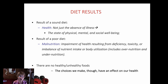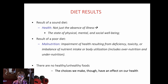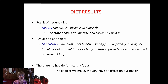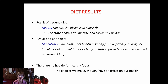The results of a poor diet is malnutrition. 'Mal' means poor — it's the impairment of health that results not just from deficiency of nutrients, but from toxicities, too much, or an imbalance of nutrient intake, or poor utilization by the body. So malnutrition can refer to undernutrition but also overnutrition. There are no healthy or unhealthy foods — it's the choices we make over time that have an effect on our health.